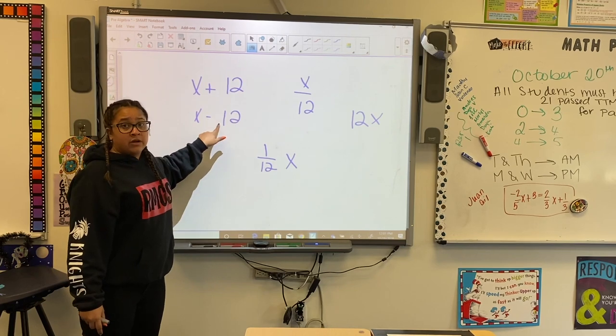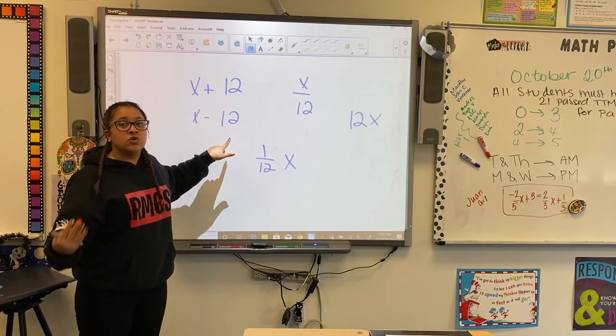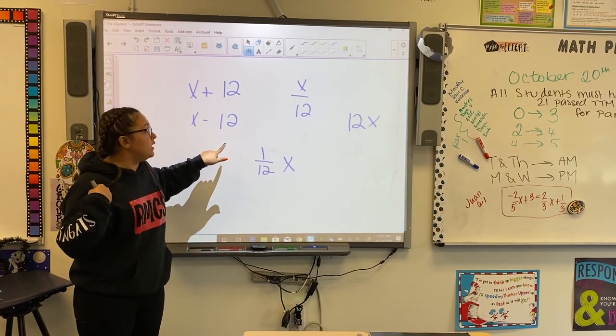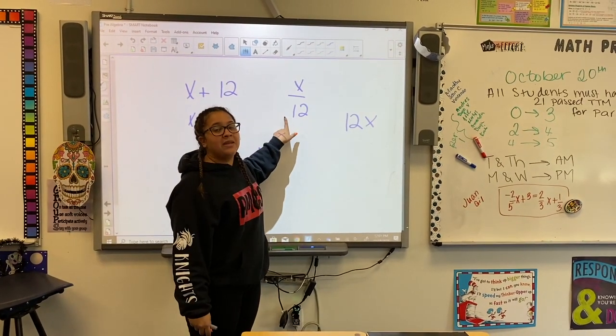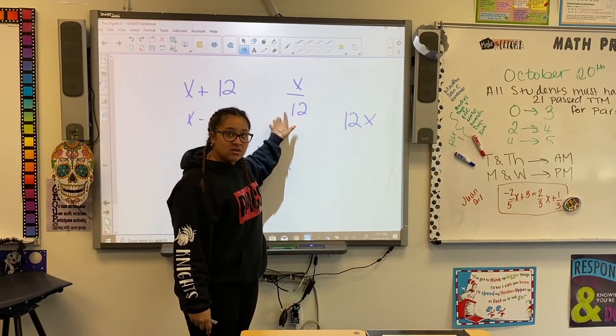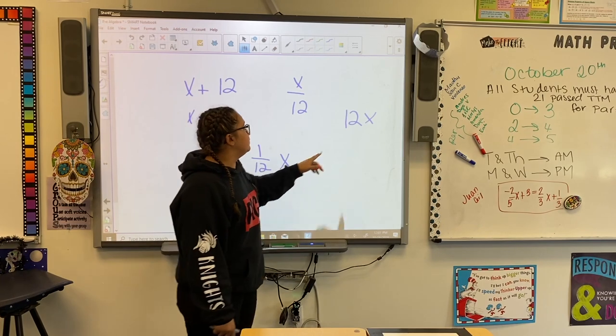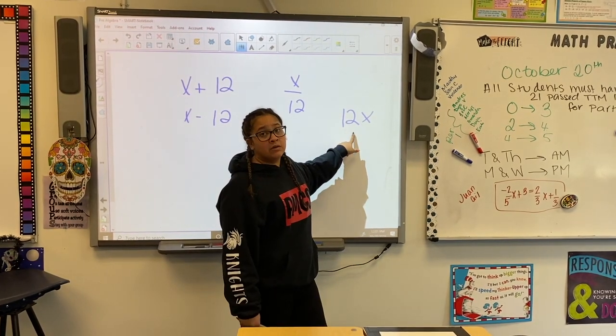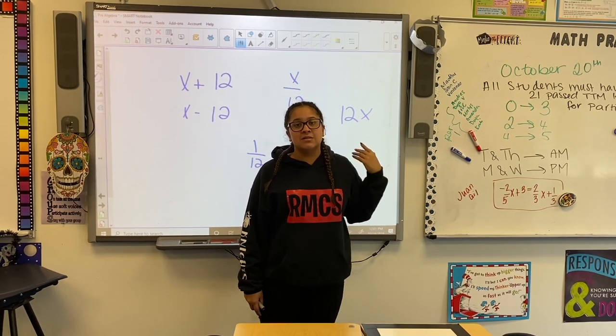What is happening here? x minus 12, subtracting. So our inverse operation would be addition. What is happening here? Division. So our inverse operation would be multiplication. What's happening here? Multiplication. So our inverse operation would be division.